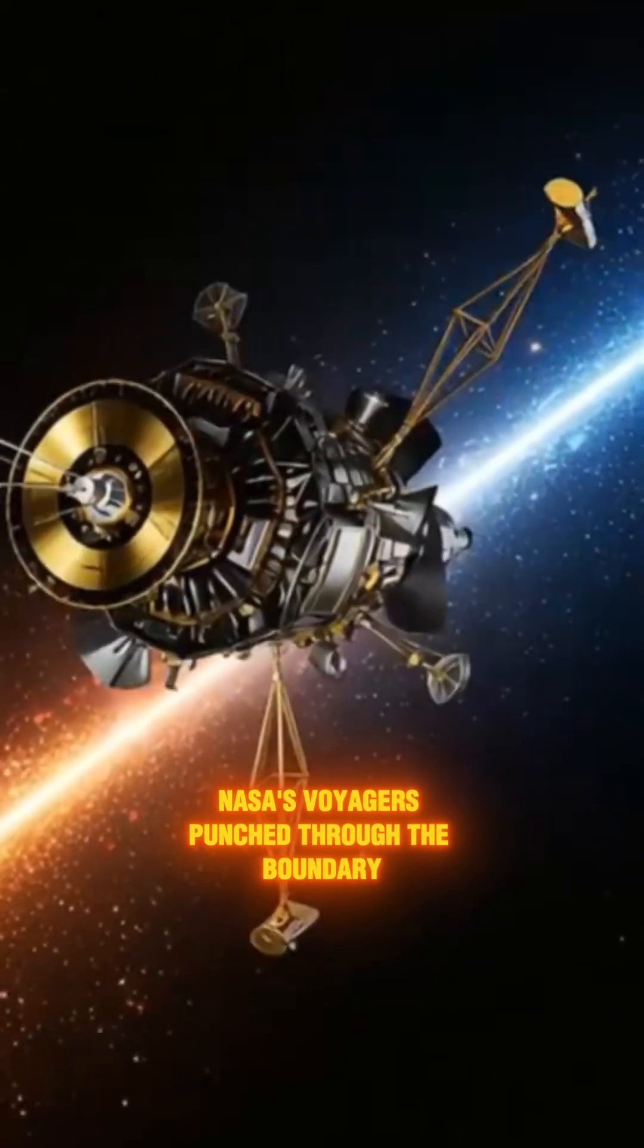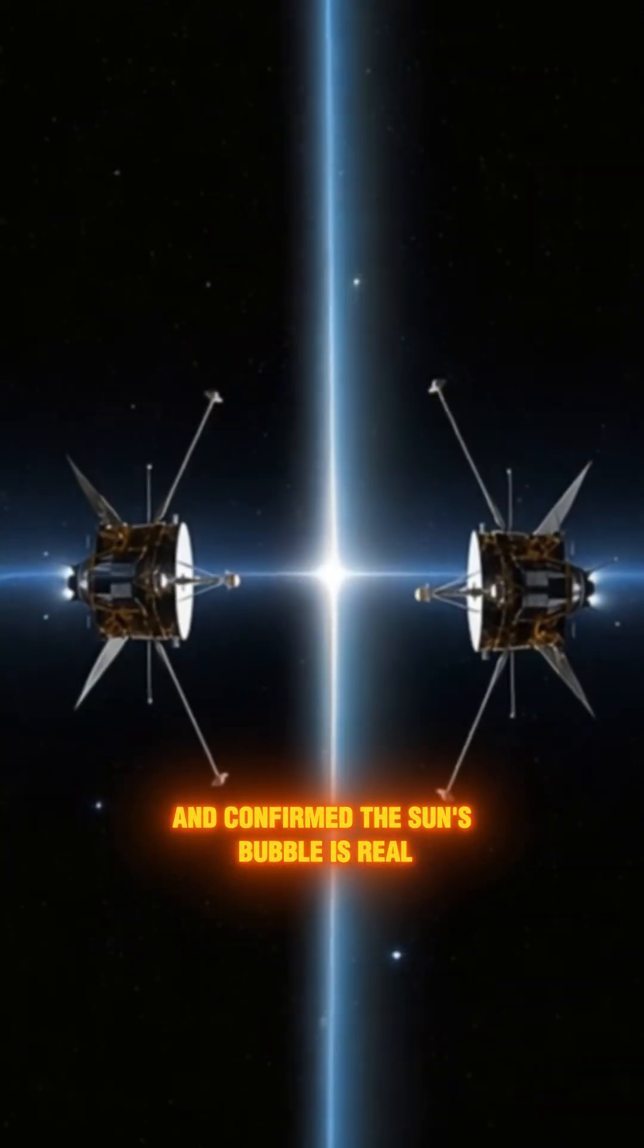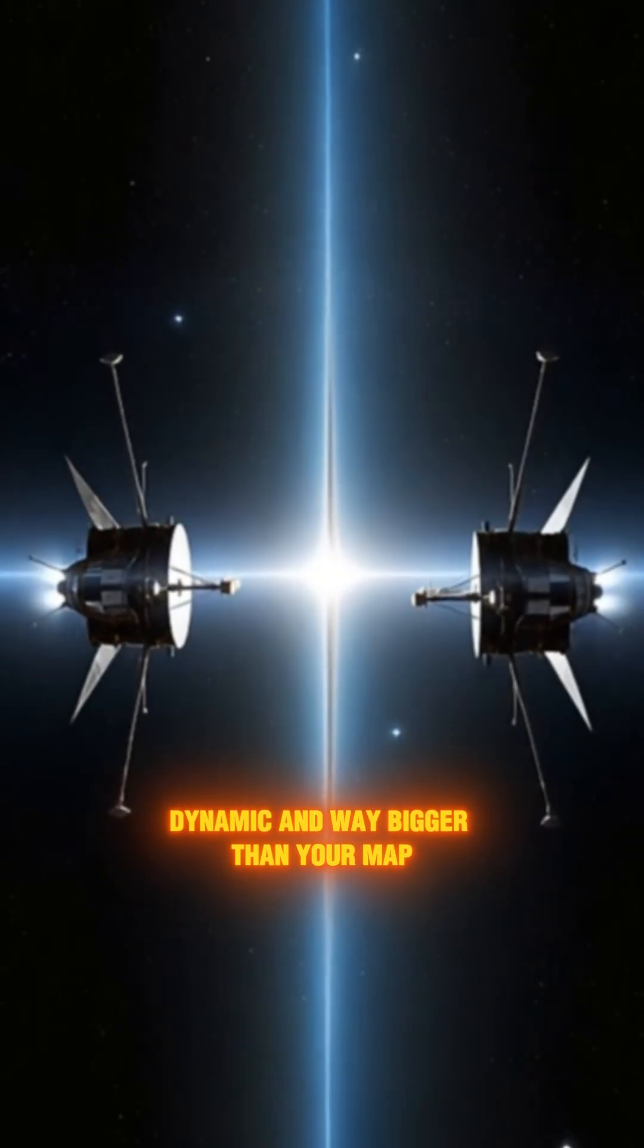NASA's Voyagers punched through the boundary and confirmed the sun's bubble is real, dynamic, and way bigger than your map.